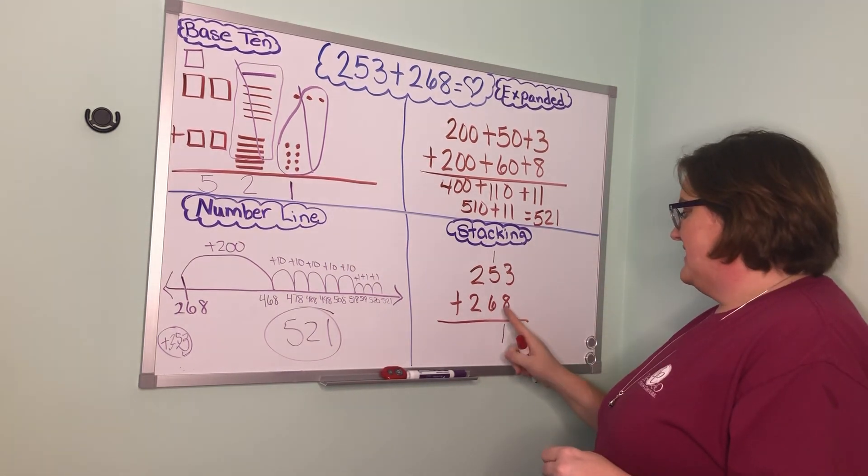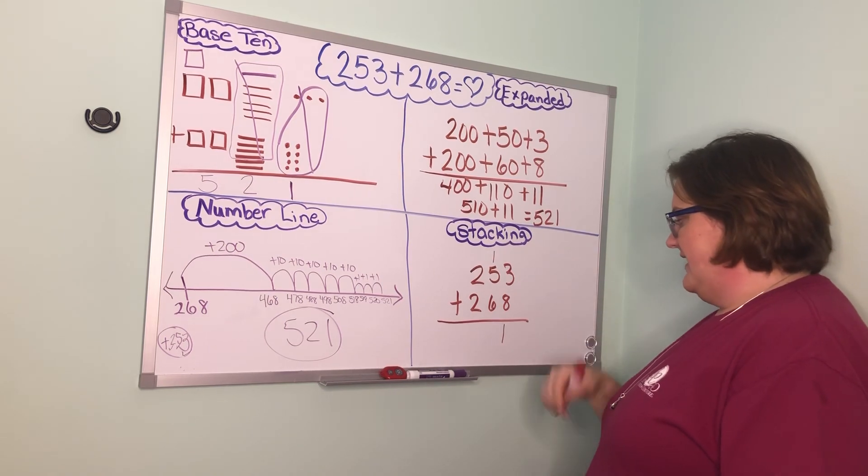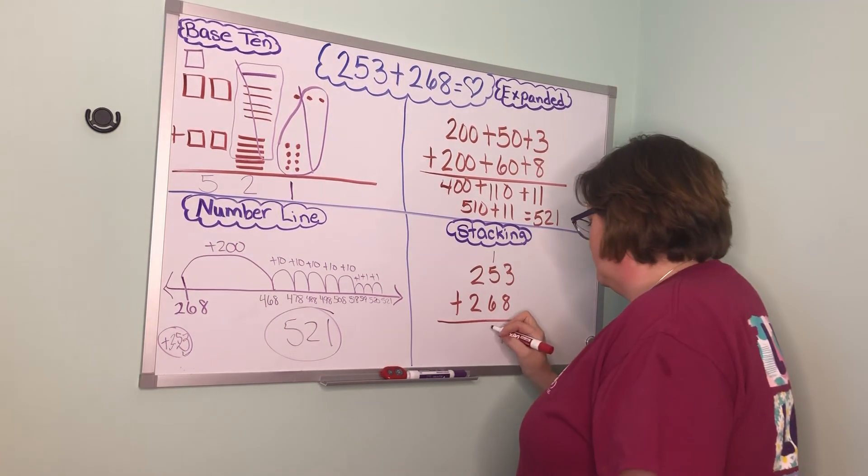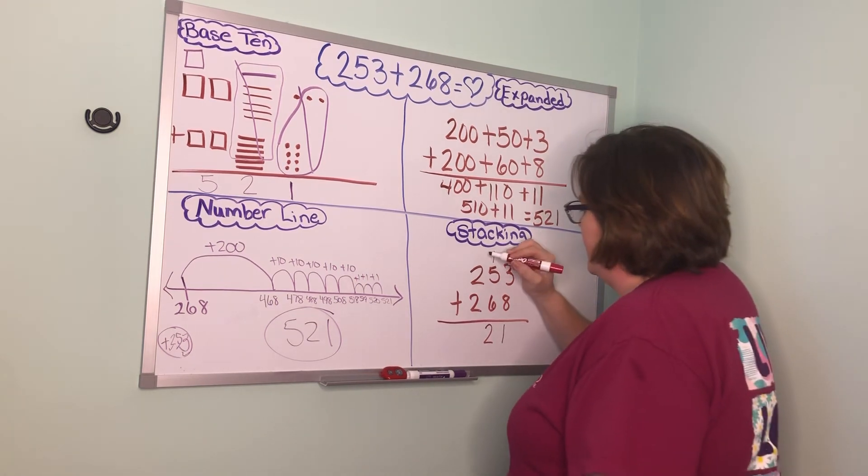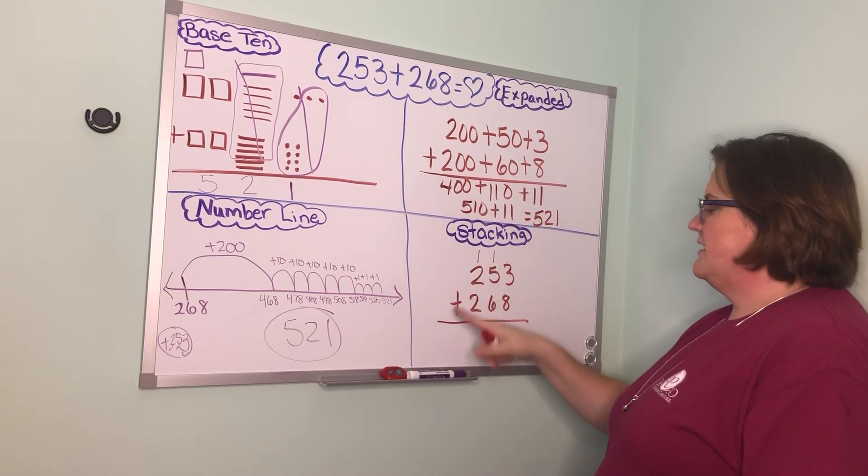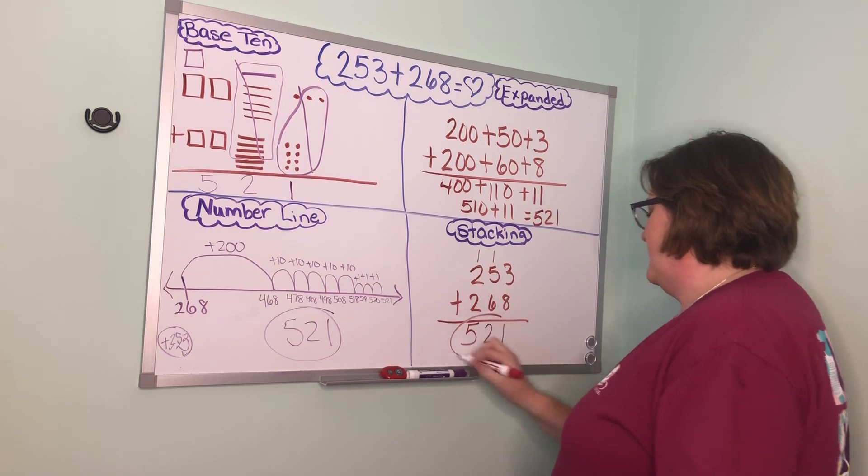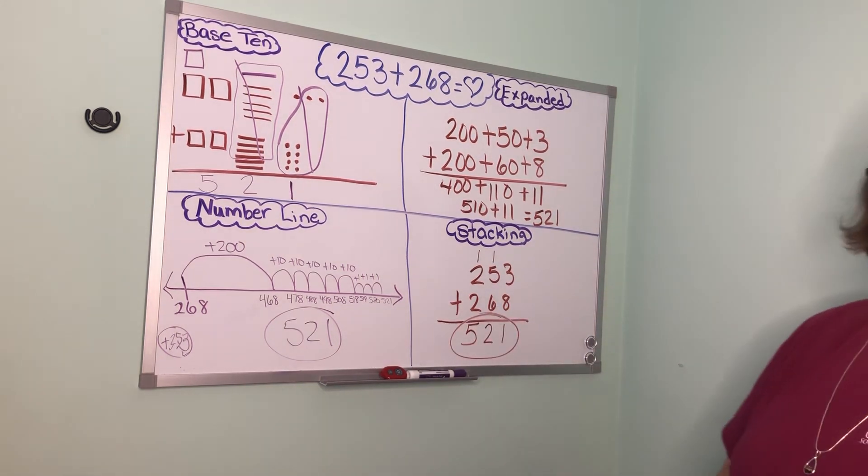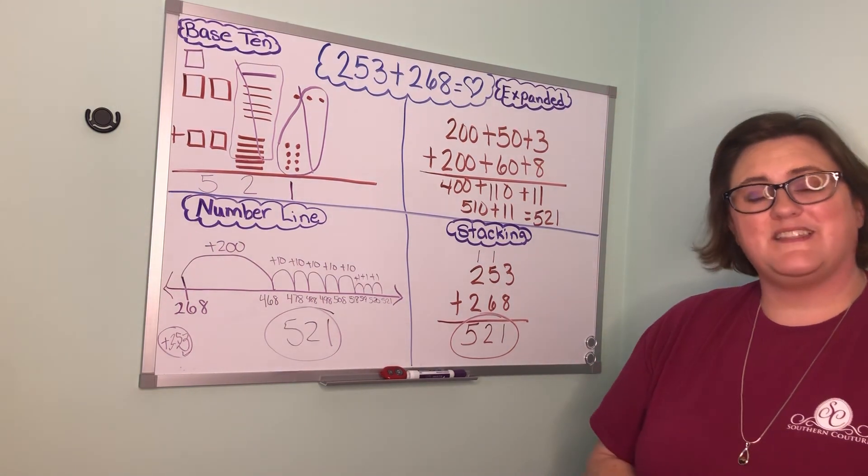So now we have 6 plus 5 which is 11. Add one more 10 and that's 12. And then I'm ready to carry that one over. And now I have two hundreds plus two hundreds plus 100 which gives me 500. So my answer is 521. Pick the strategy that you are most comfortable with and have fun.